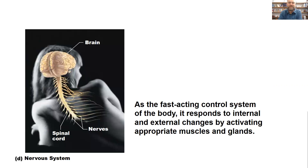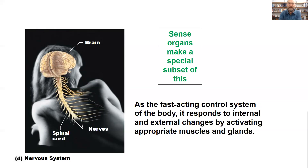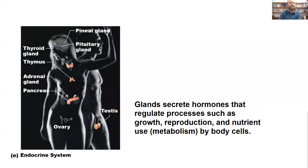We'll cover the nervous system, which integrates information from all parts of the body and is very fast-acting to allow control of the body, including the muscular system. This includes your sense organs — your eyes, olfactory senses, ears, et cetera. We'll cover the endocrine system — glands throughout the body that produce hormones important for regulating growth, development, reproduction, and metabolism. Some of the more famous endocrine glands include the pineal gland, pituitary, thyroid, thymus, adrenal, pancreas, ovary, and testes.